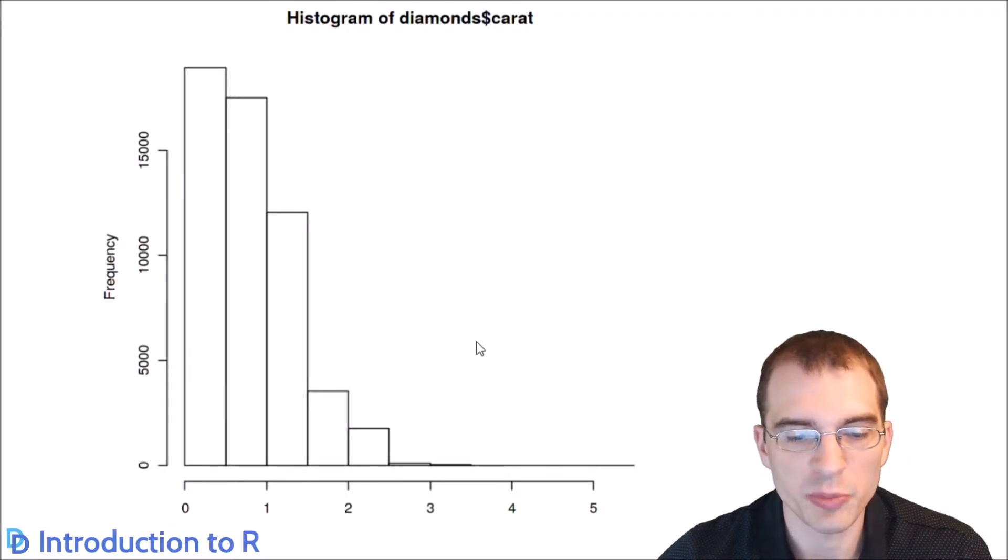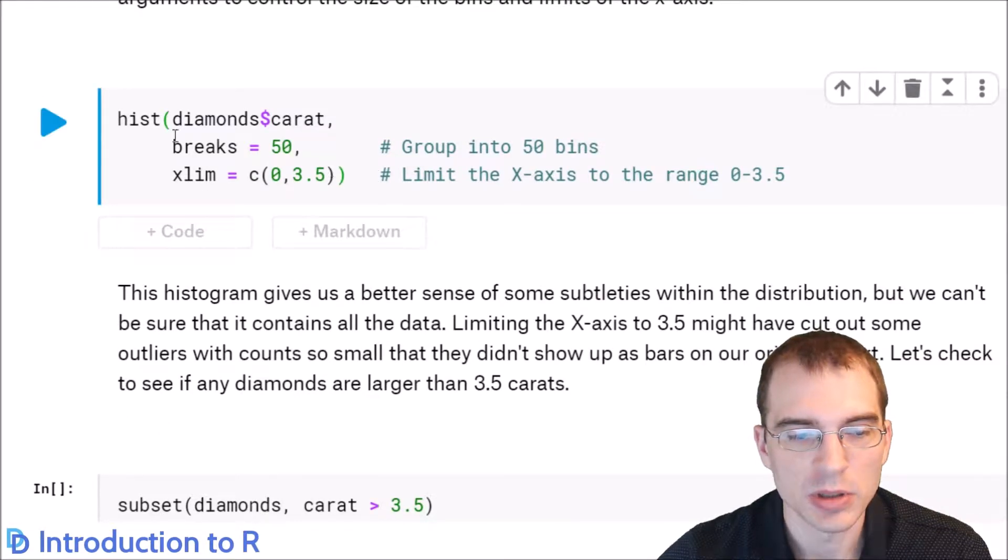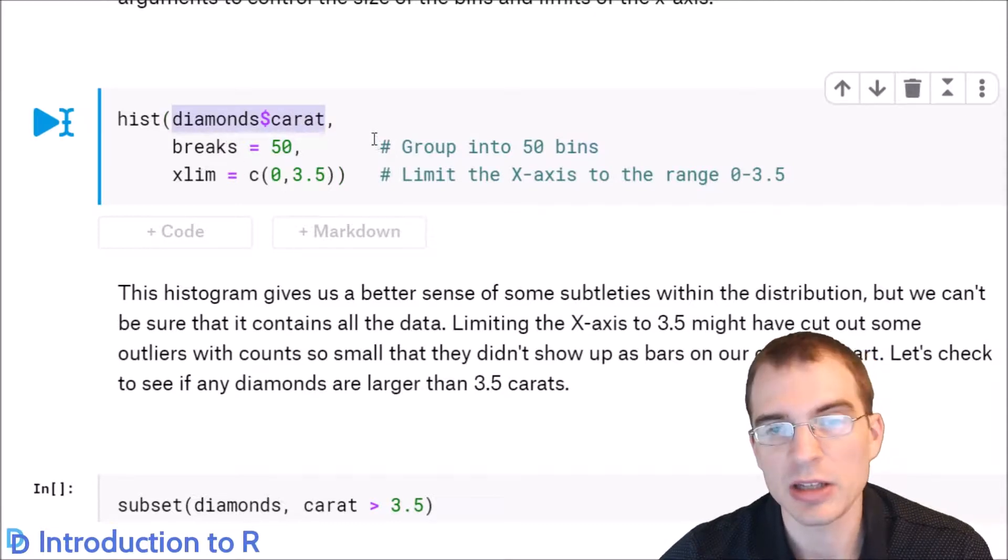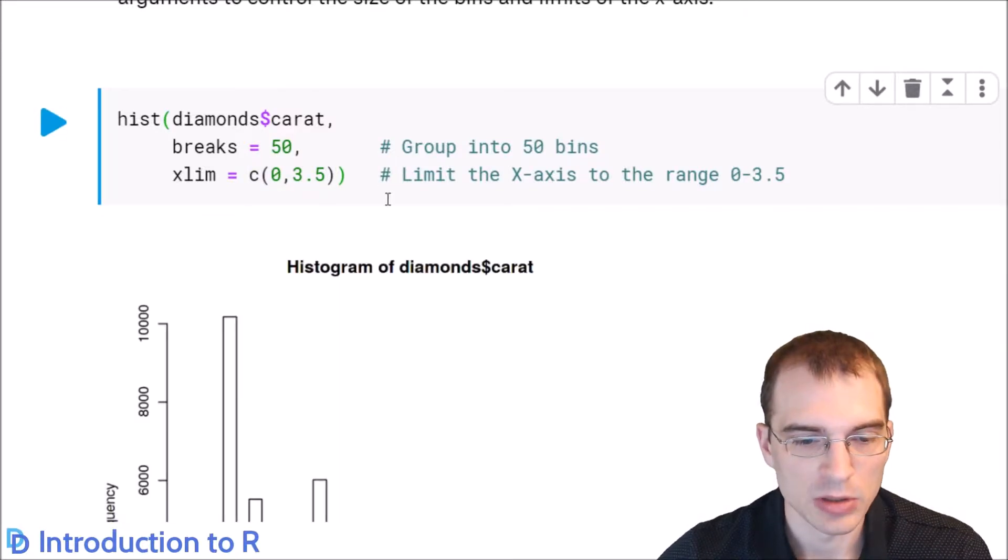You can take a finer-grained look with the histogram by increasing the number of bins. So to do that in Base R, you need to add a few extra arguments. You do hist again, the same carat will be the variable, but you can specify the number of bins with this breaks argument. So we're going to use 50 bins instead of the default. And we're also going to use xlim to limit the range of the x-values between 0 and 3.5, because it looked like from the previous plot there weren't really any diamonds too much bigger than that.